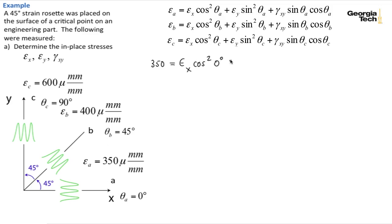So epsilon_a is 350 micro equals epsilon_x, which is unknown, cosine squared epsilon_a, we said was 0 degrees, plus epsilon_y sine squared 0 degrees, plus gamma_xy sine 0 degrees cosine 0 degrees.